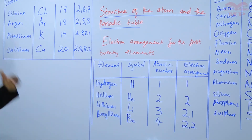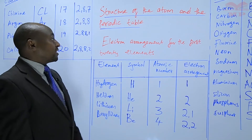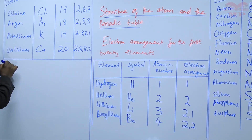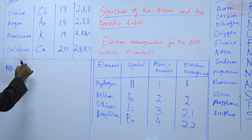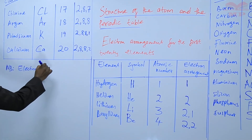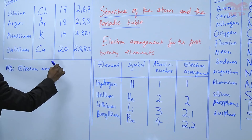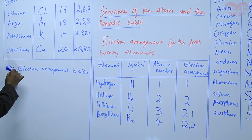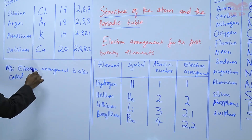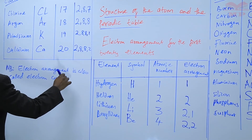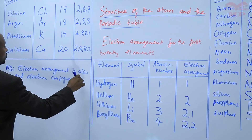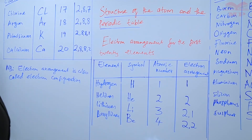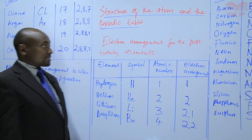That is how electrons are arranged within the first 20 elements. It's also good to note that electron arrangement is also called electron configuration. So when you see electron configuration and electron arrangement, they mean the same thing.